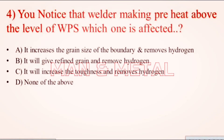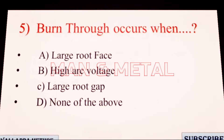Question 4: You notice a welder making preheat above the level of the WPS. Which one is affected? a) It increases the grain size at the boundary and removes hydrogen, b) it will give refined grain and remove hydrogen, c) it will increase toughness and remove hydrogen, d) none of the above.